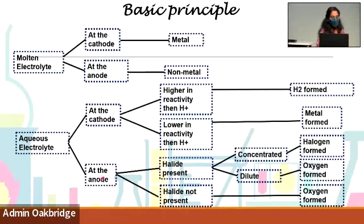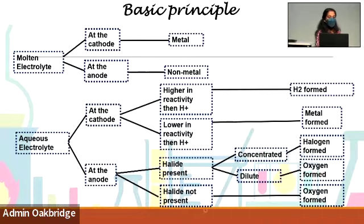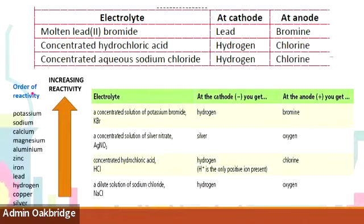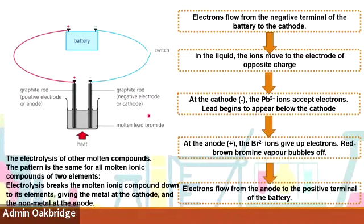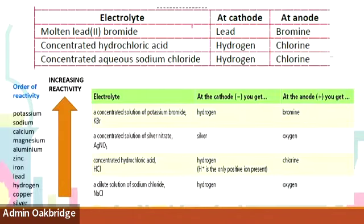At the anode for aqueous electrolyte: if a halide is present and the solution is concentrated, halogen is formed. Diluted halide solution → oxygen is formed. No halide present → oxygen gas is formed. Note: the reactivity series will not be provided in the exam paper. For molten lead bromide: cathode releases lead, anode releases bromine.